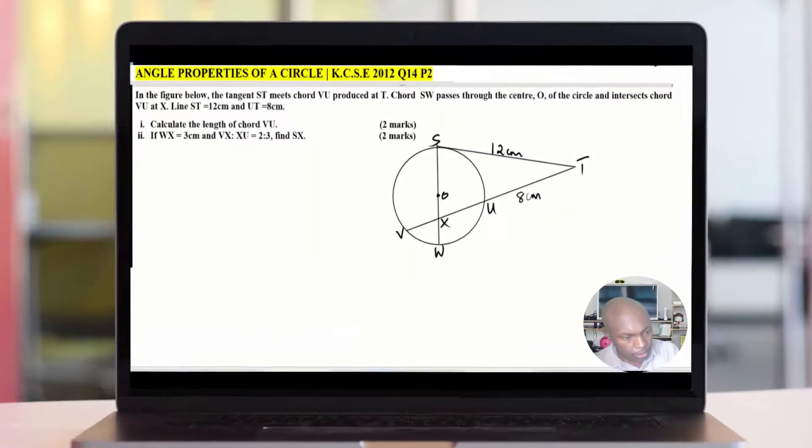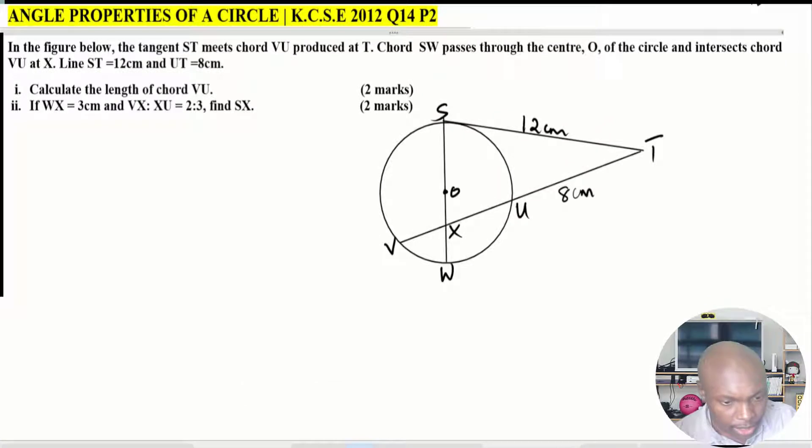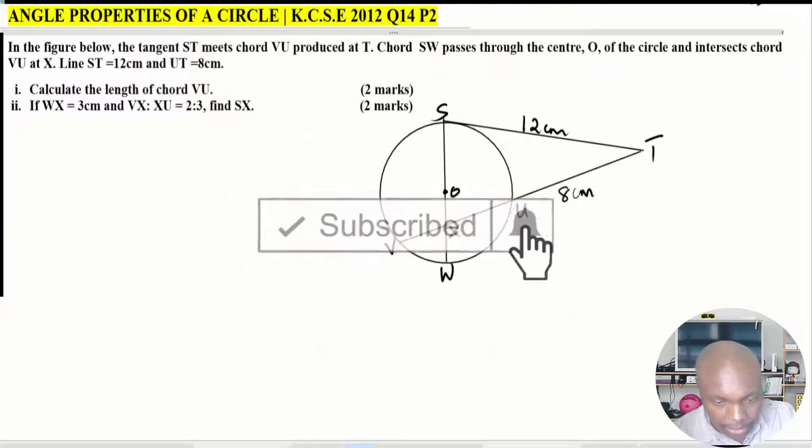Angle properties of a circle. In the figure below, the tangent ST meets chord VU produced at T. Chord SW passes through the center O of the circle and intersects chord VU at X. Line ST equals 12 centimeters and UT equals 8 centimeters. Question number one: calculate the length of chord VU. If WX equals 3 centimeters and VX ratio XU equals 2 is to 3, find SX.